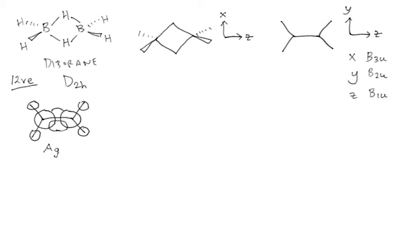G, or gerade, means that an orbital is symmetric with respect to inversion. So if you start somewhere on the orbital and see a positive sign, going through the center to the opposite part of the orbital you should find the same sign. Orbitals like p-orbitals carry a U for ungerade, which designates orbitals that are anti-symmetric with respect to inversion.